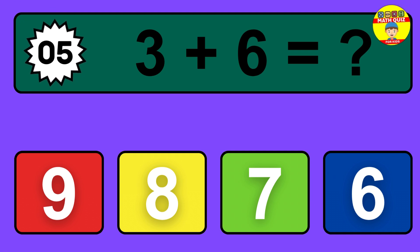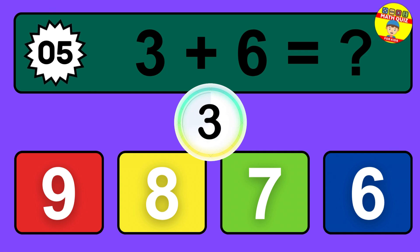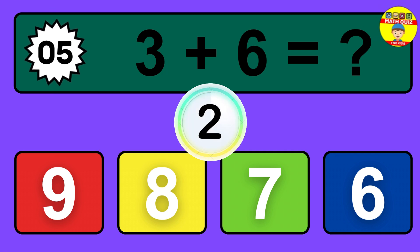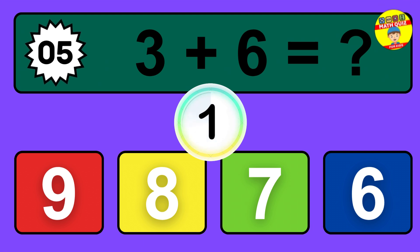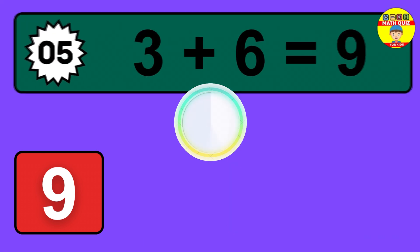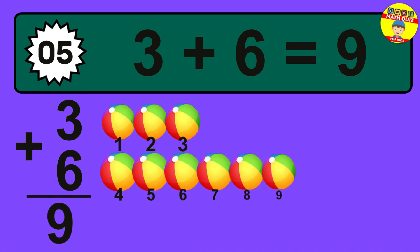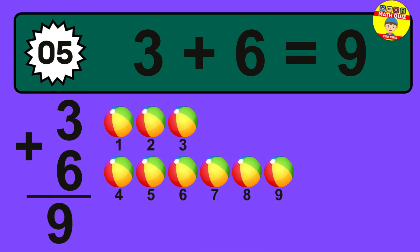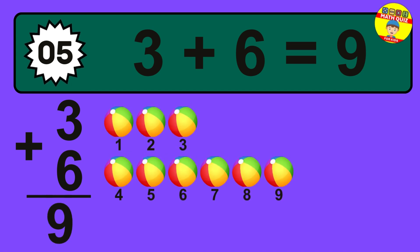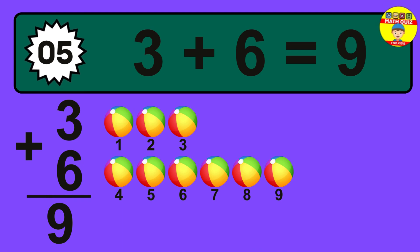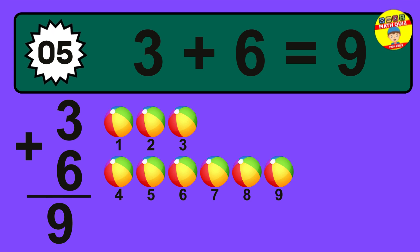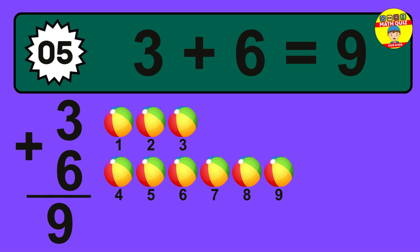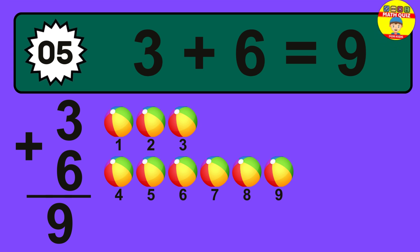Question 5. 3 plus 6 equals what? The answer is 3 plus 6 is 9. Let's count it: 1, 2, 3, 4, 5, 6, 7, 8, 9.